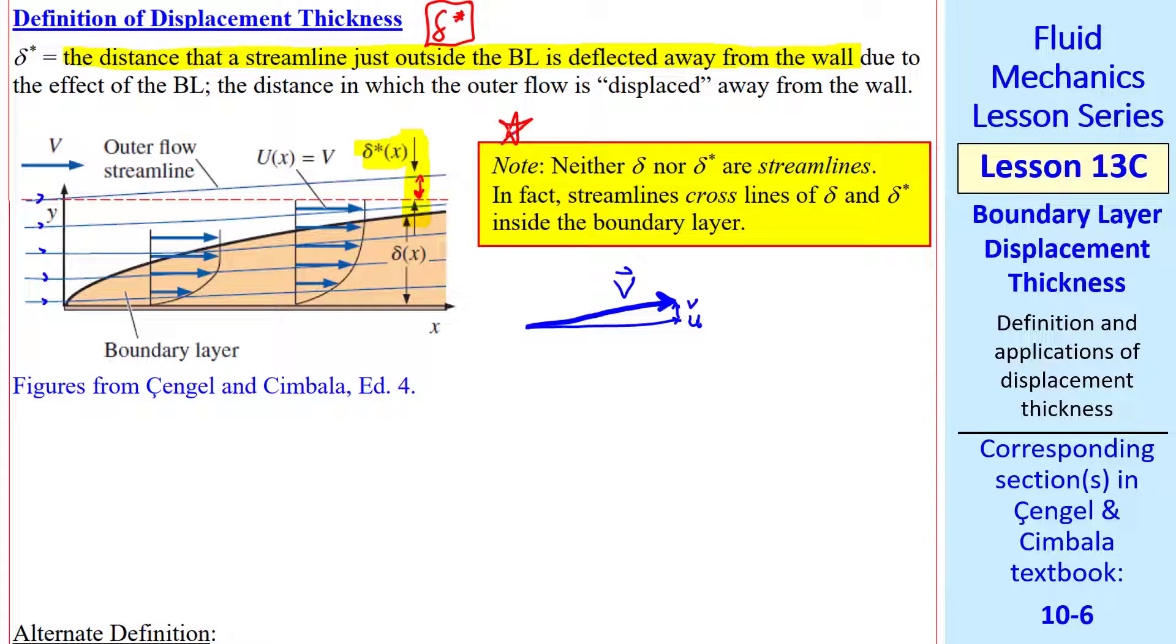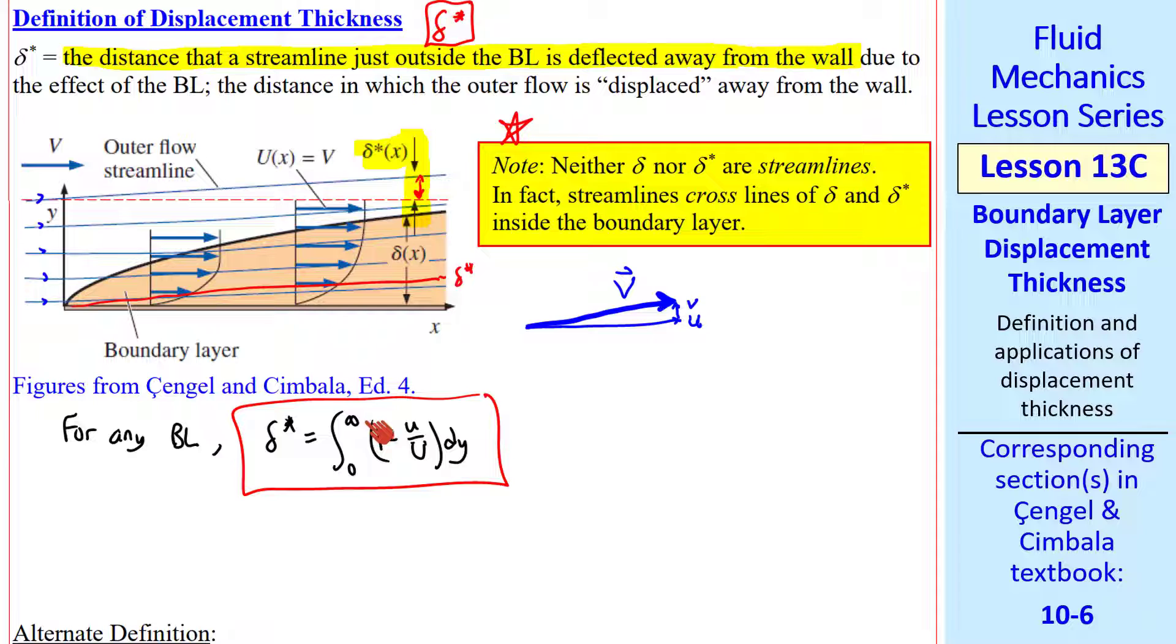I make a note here, since this is often confusing for students, neither delta nor delta star are streamlines. You can see that the streamlines cross this boundary that we drew as delta. If we draw delta star inside the boundary layer, the streamlines also cross that boundary as well. The net effect due to conservation of mass is that these streamlines tilt upward. For any boundary layer, it turns out that delta star is given by this integral: integral from 0 to infinity, 1 minus u over capital U dy. We use infinity because once you get up above delta, there's really no change, and so this term contributes nothing to the integral.